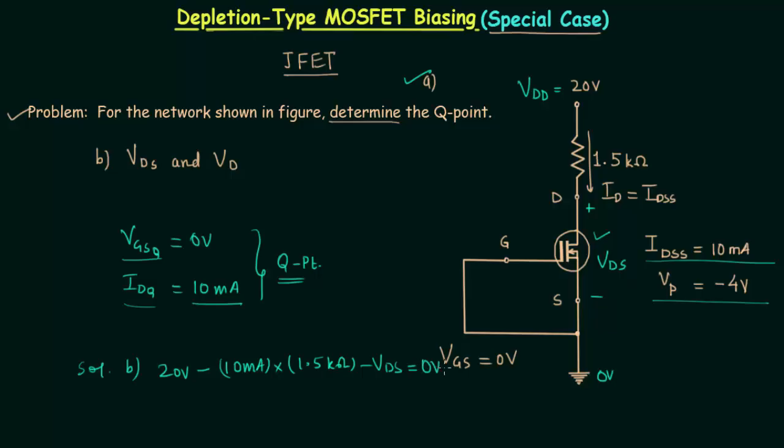So VDS equals 20V minus 15V, which equals 5V. The output voltage VDS is equal to 5V.